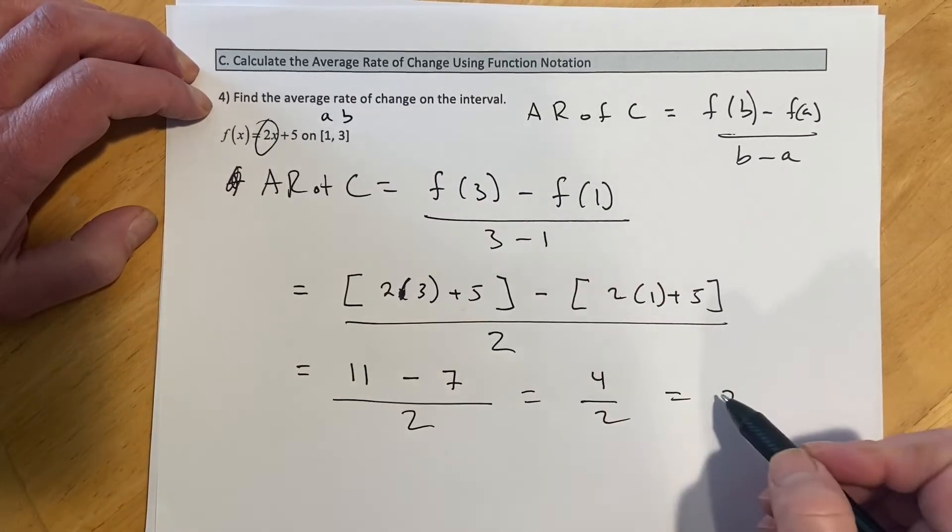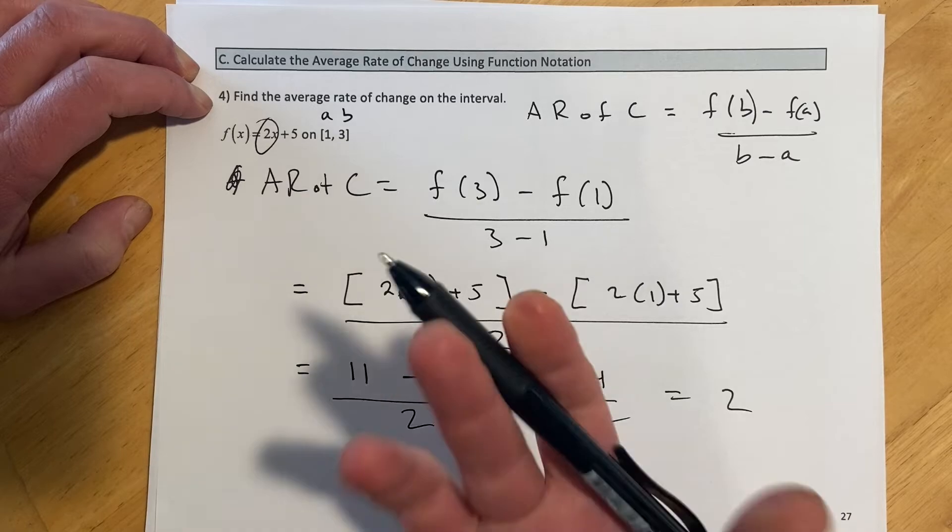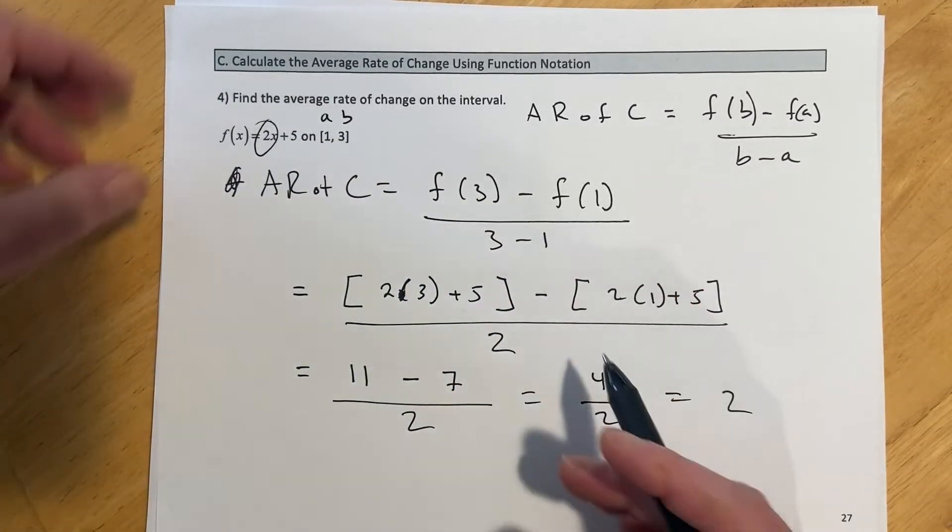So when it's linear, the average rate of change is always going to be the slope. You'll see in the next example, it's not linear, and so then it will matter which two points we're looking between.